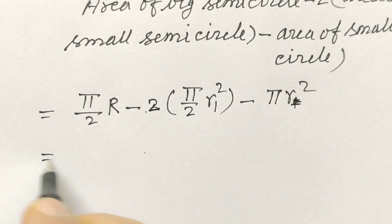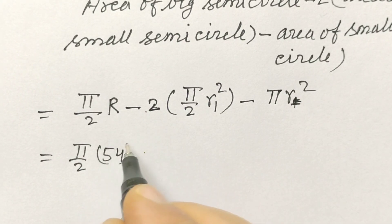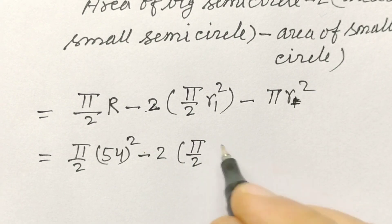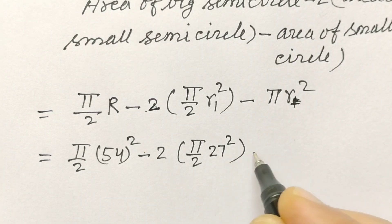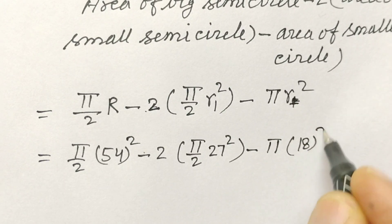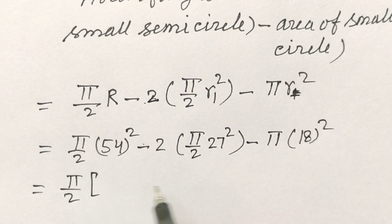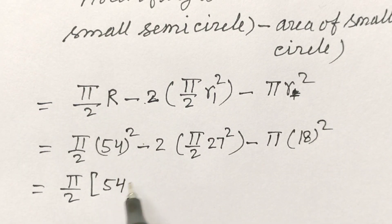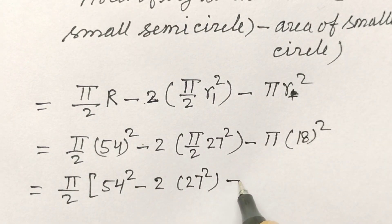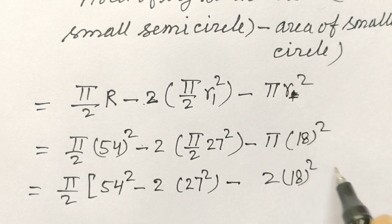Putting in the values: (π/2)(54)² minus 2 times (π/2)(27)² minus π(18)². Taking π/2 as common: (π/2)[54² minus 2×27² minus 2×18²], which is (π/2)[2916 minus 1458 minus 648].